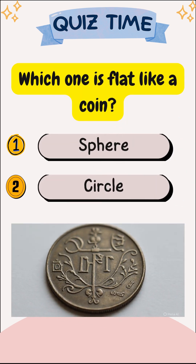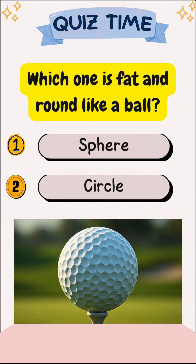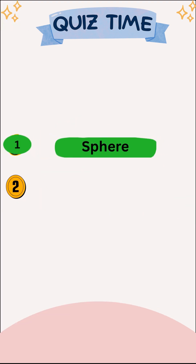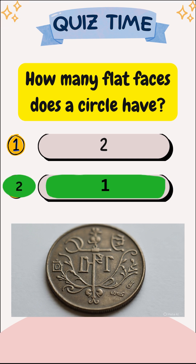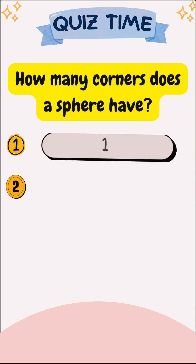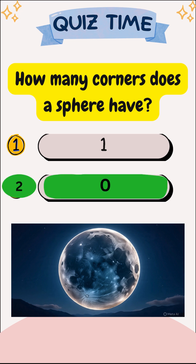Which one is flat like a coin? Circle. Which one is fat and round like a ball? Sphere. How many flat faces does a circle have? One. How many corners does a sphere have? Zero.